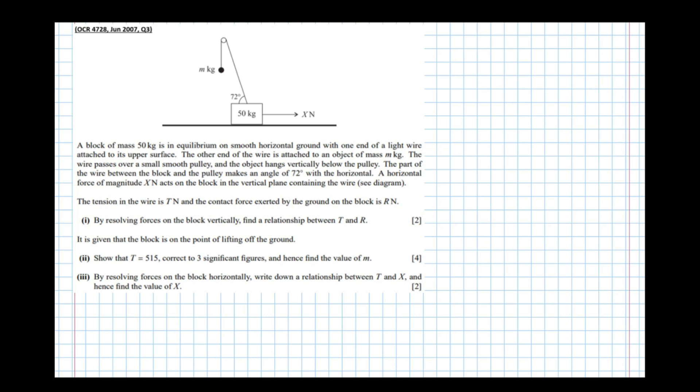So the question says, a block of mass 50 kilograms is in equilibrium on a smooth horizontal ground with one end of a light wire attached to its upper surface. The other end of the wire is attached to an object of mass m kilograms. The wire passes over a small smooth pulley, and the object hangs vertically below the pulley.